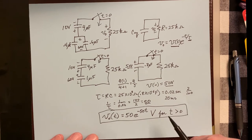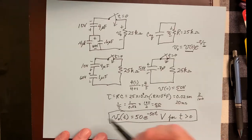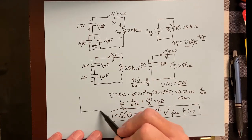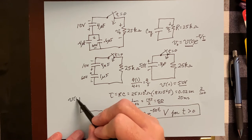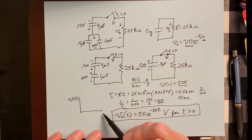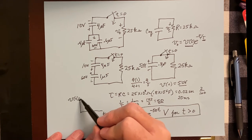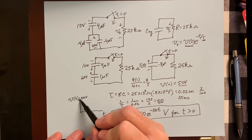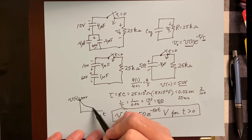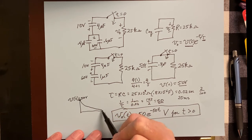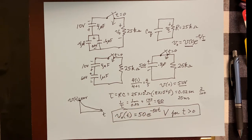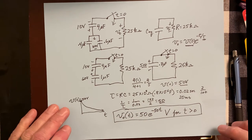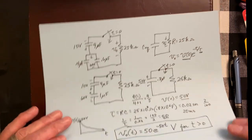That answer represents a decaying exponential. Plotting V(t) versus t, it starts at 50 volts and decays toward zero over time. That completes the worked problem.